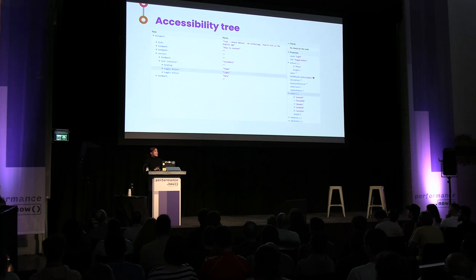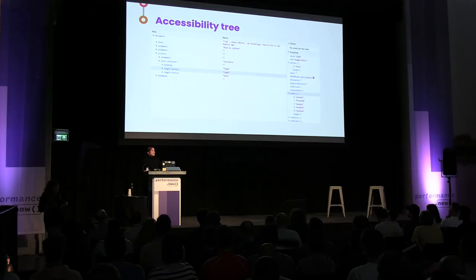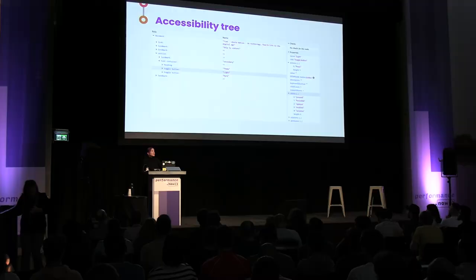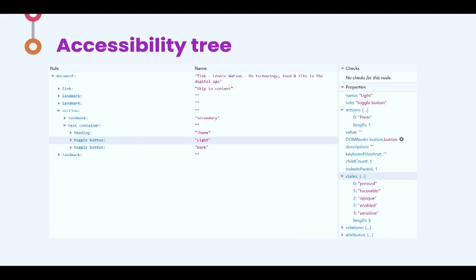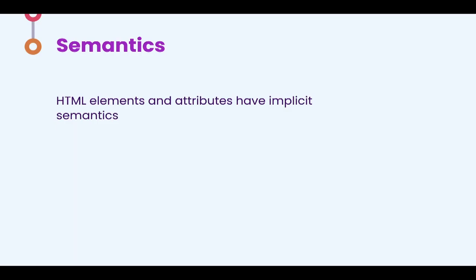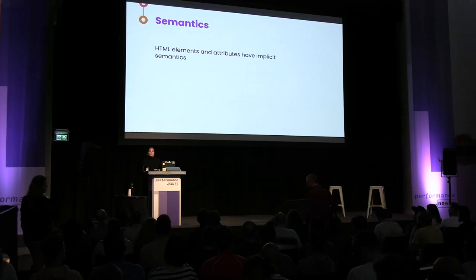The answer to that is something called the accessibility tree — another structure the browser creates. Alongside the DOM and the CSS object model, there's this thing called the accessibility tree. Its closest parallel is the DOM. Where the DOM is a tree hierarchy of all content shown on the page, the accessibility tree is the same thing but contains all the accessibility information about what's in the DOM. You've probably heard the phrase 'semantics.' In accessibility it's particularly important — it's pretty much the core feature of my experience as a screen reader user.